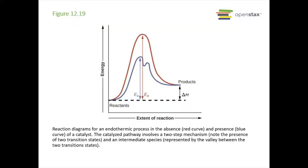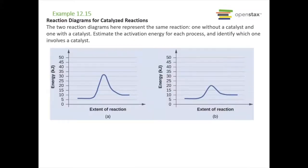So just as an example, we have an endothermic process here — the products have a higher energy than the reactants. You can see that the catalyst is the blue curve; it has a lower activation energy than without a catalyst, which is shown in red. We're given these two reaction diagrams representing the same reaction, one without a catalyst and one with.